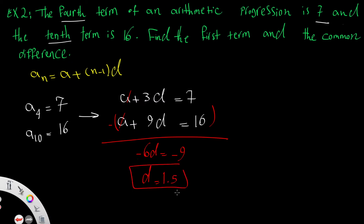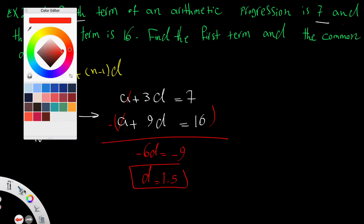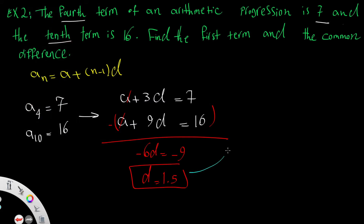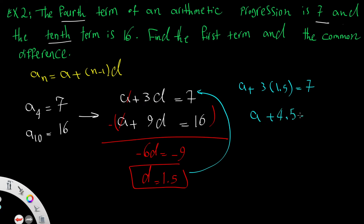To find a, substitute d = 1.5 into the first equation: a + 3 × 1.5 = 7, so a + 4.5 = 7, giving a = 2.5.